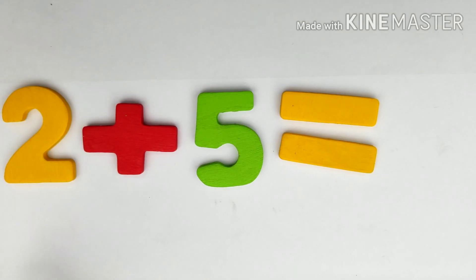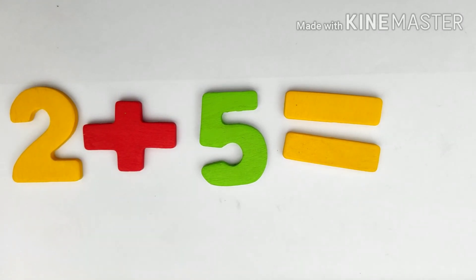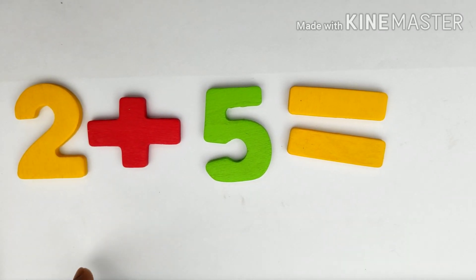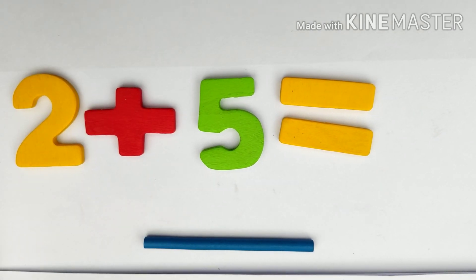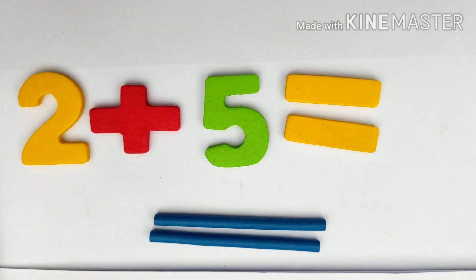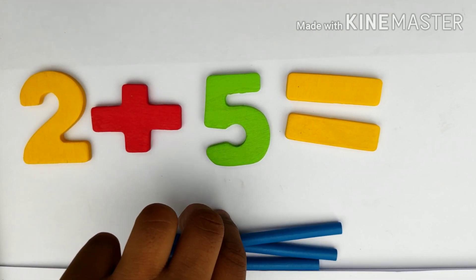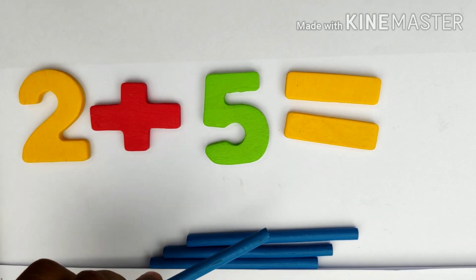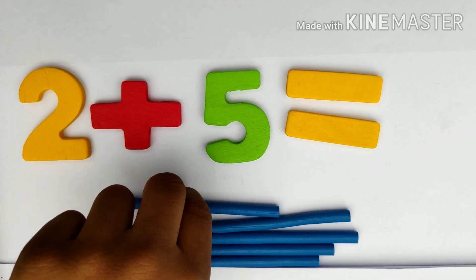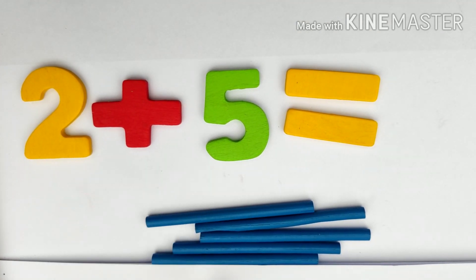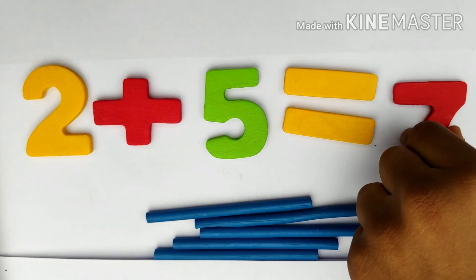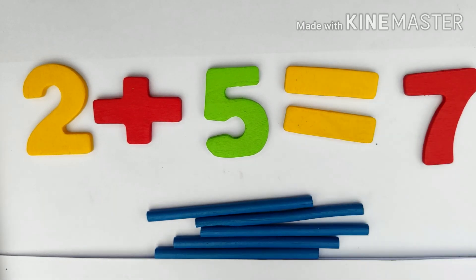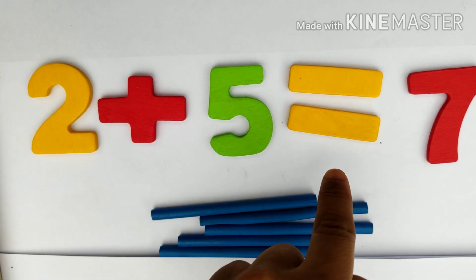Activity time! 2 plus 5 equals? 2 in the mind. After 2: 3, 4, 5, 6, 7. The answer is 7. 2 plus 5 equals 7. Let's take one more example.